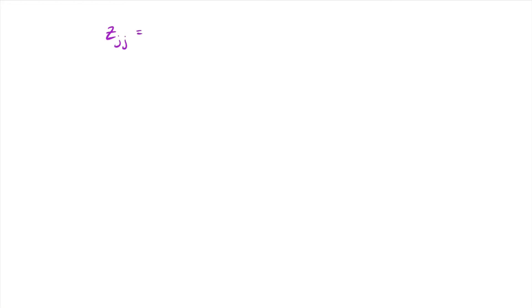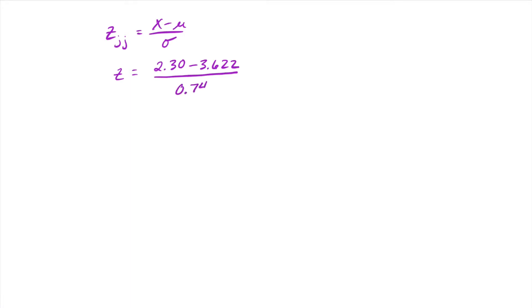So first we're going to find the z-score for Josh Johnson. Remember, the z-score formula is x minus mu over sigma. x would be Josh Johnson's ERA of 2.30. We subtract the mean of the National League, which was 3.622, divided by the standard deviation of the National League, which is 0.743. Doing that math, we end up with a z-score for Josh Johnson of approximately negative 1.78.